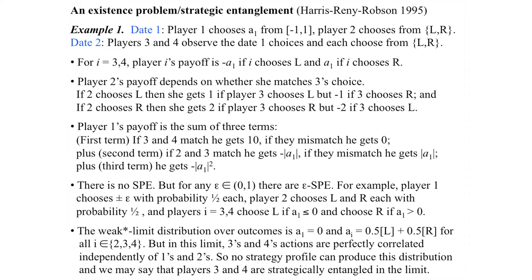The game has no sub-game perfect equilibrium — which was a shock. Let's argue by contradiction. Suppose there is a sub-game perfect equilibrium. Claim one: player two must be mixing 50-50 on left-right. Why? Suppose player two is putting more weight on left than on right.